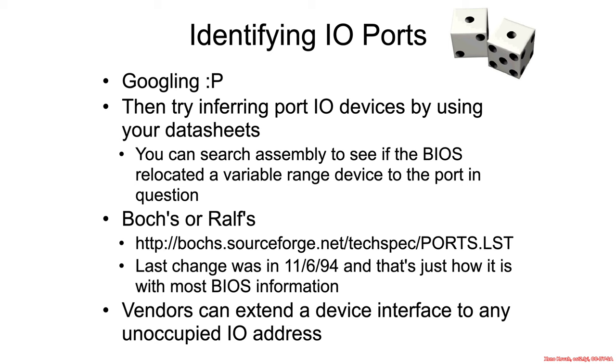Also, because you know now that variable port I/O ranges are a thing, you should check whether or not there was anything in the assembly that relocated a particular variable port range to the ports that are in question. Now, of course, it's hard to find that unless you read all of the assembly starting from the very beginning, or search for something approximating the base of a variable port I/O range.